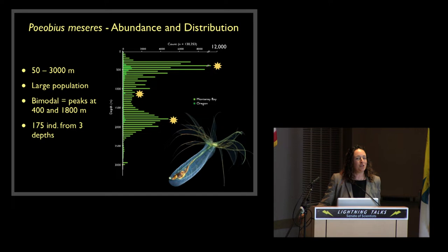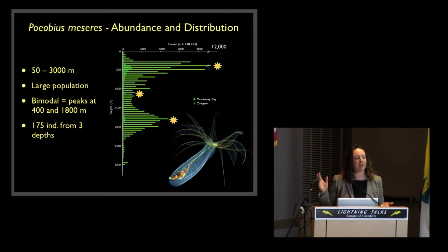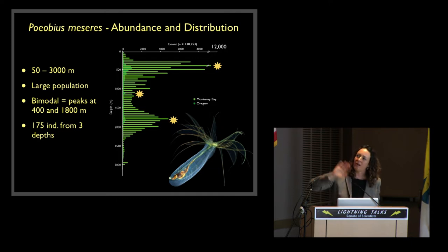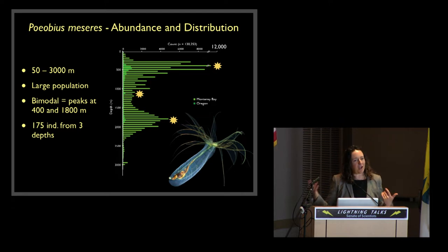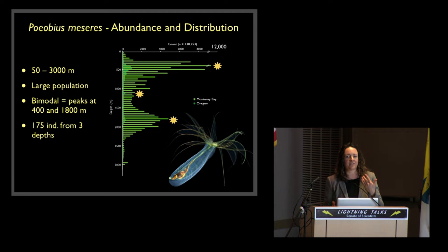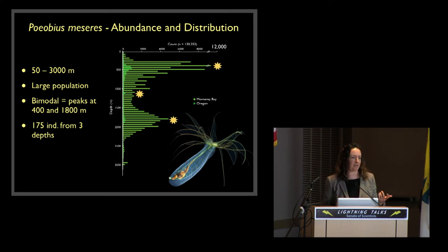It is an unusual polychaete and an unusual midwater animal in that it has a very broad depth distribution. They're found throughout the eastern Pacific. It's not a huge geographic range, but they are found from almost the surface down to about 3,000 meters. That's very unusual — most midwater animals have a couple hundred meters to maybe a thousand meter depth range.